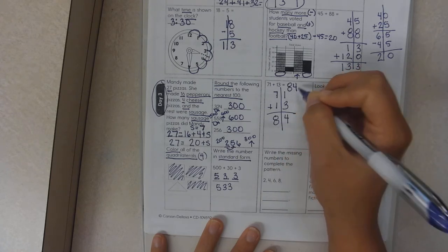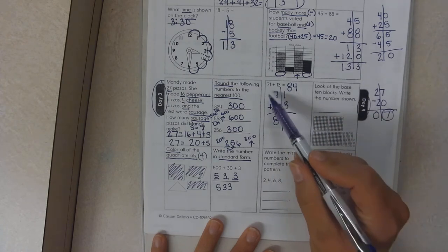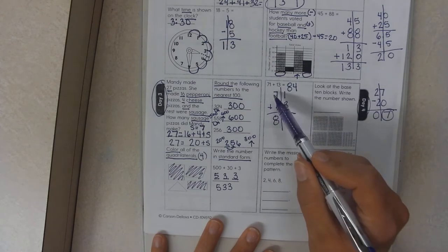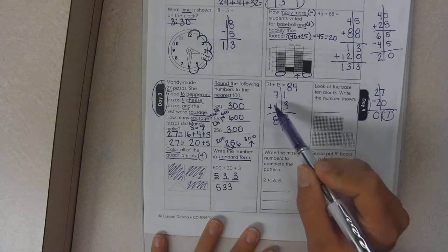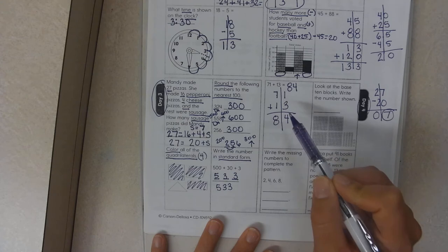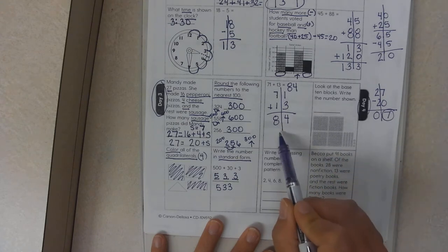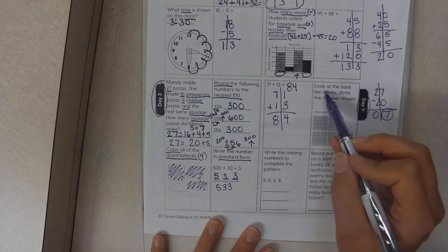But as I did that, I want to remind you that this seven is 70, this one is 10. So it's actually 70 plus 10 equals 80 because it is in the tens place.